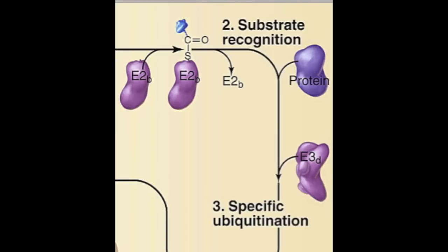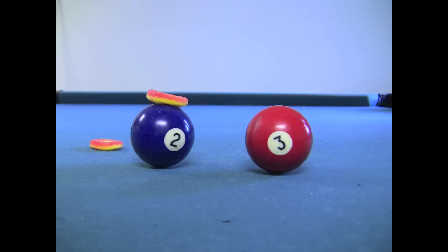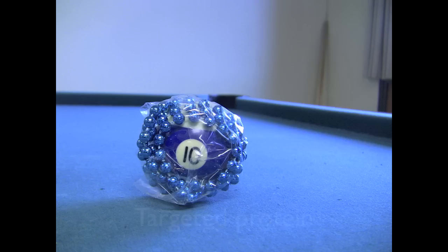In step three, E3, or ubiquitin ligase, catalyzes the transfer of ubiquitin from E2 to a protein substrate. There are hundreds of E3s that confer further specificity to protein substrates.